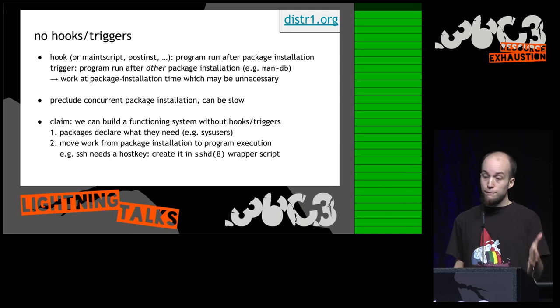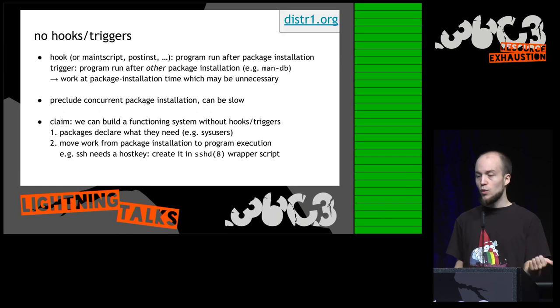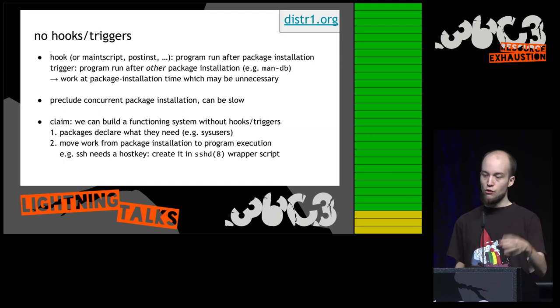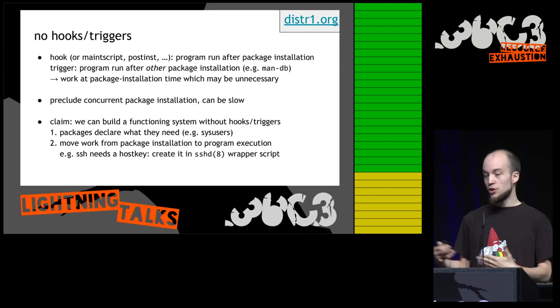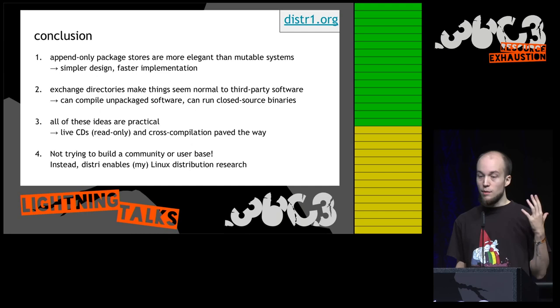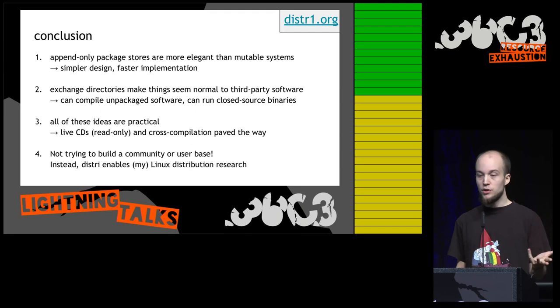We claim you can build a fully functioning Linux system without any hooks or triggers. Our approach is twofold: first, packages declare what they need — for example, nginx might declare it needs a new system user. Where declarative needs don't make sense, move the work from package installation time to program execution time. For instance, an SSH server generates its host key in the sshd wrapper script rather than at install time, which is also good for read-only images. An append-only package store is more elegant, resulting in a simpler design and faster implementation — a win-win.